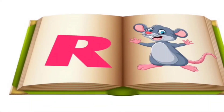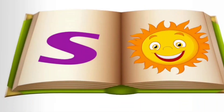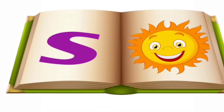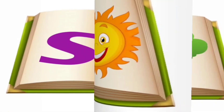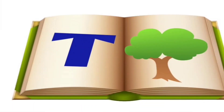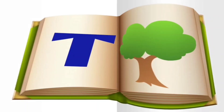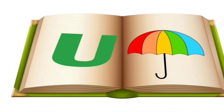R for rat, S for sun, T for tree, U for umbrella.